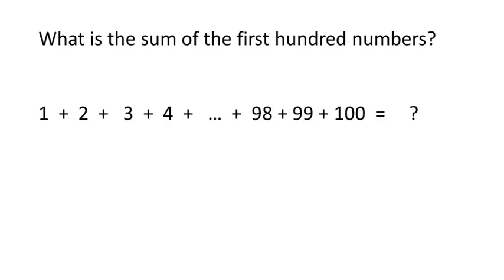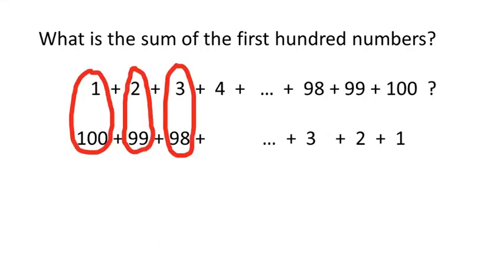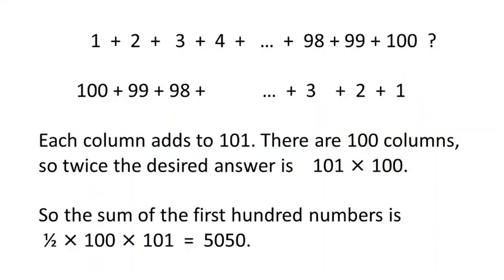A proof does both those things. Let's write down the numbers again, but in the opposite order and underneath. Now think of them as columns, like so. Each column adds to a hundred and one. There are a hundred columns, so twice the desired answer is a hundred and one times a hundred. So, the sum of the first hundred numbers is a half times a hundred times a hundred and one, which is five thousand and fifty.